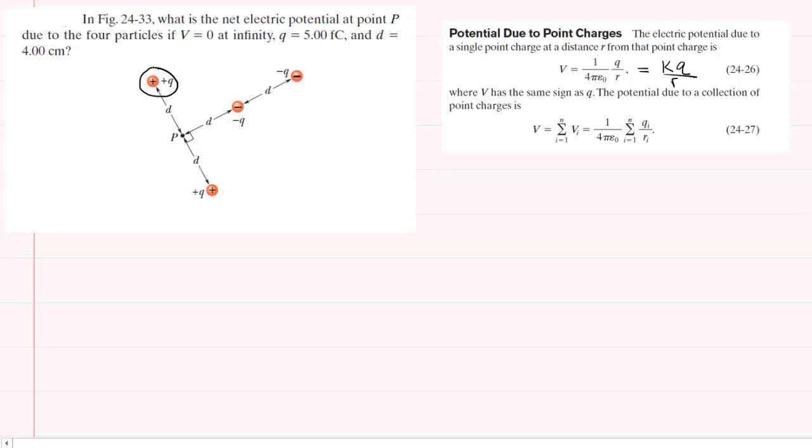If we start with this charge right here, we would say that the electric potential due to that charge would equal k multiplied by the charge q divided by the distance from that charge to point p, which is where we're trying to calculate the total potential. You can see the distance from that charge to point p is denoted by the letter d. So we're going to put d as our distance.